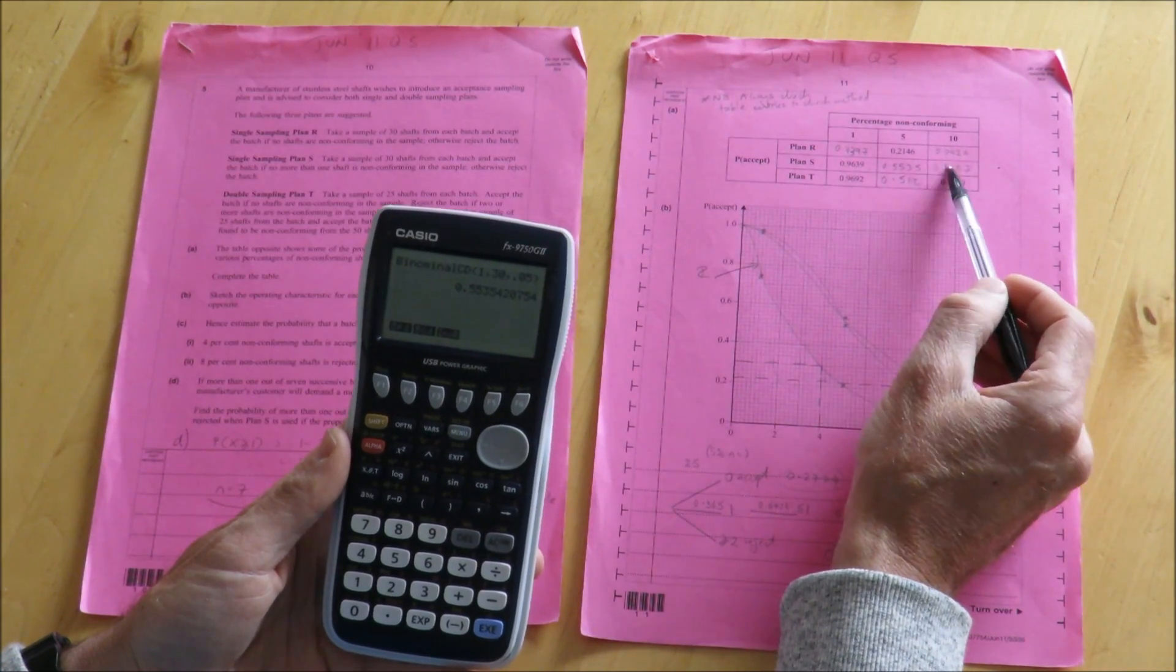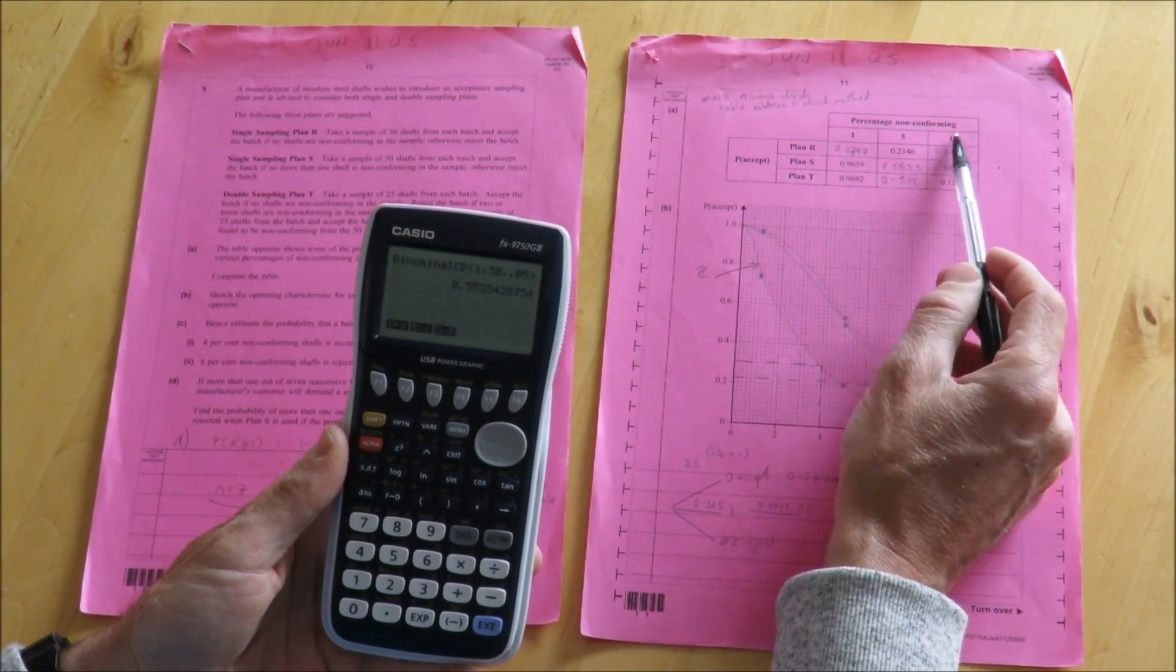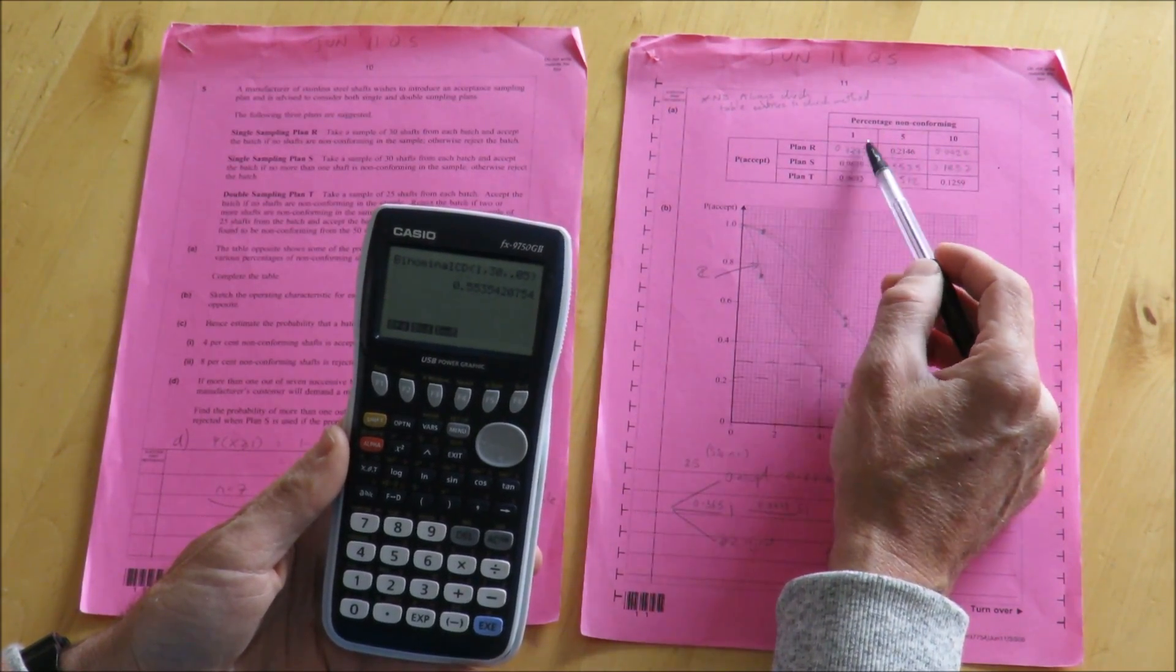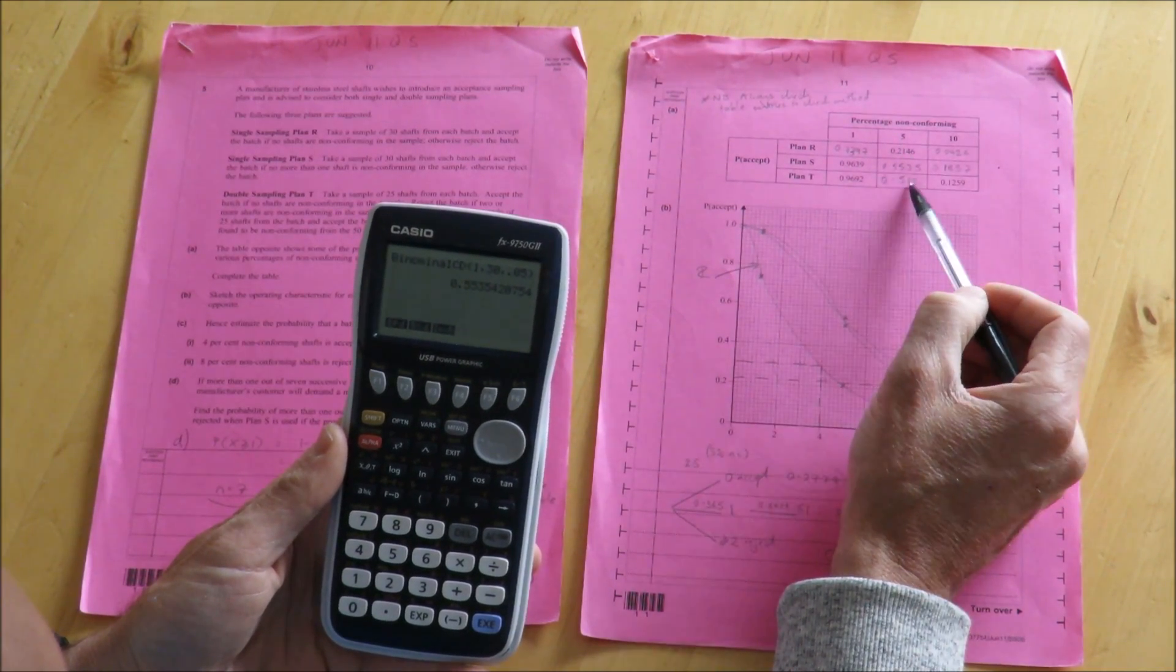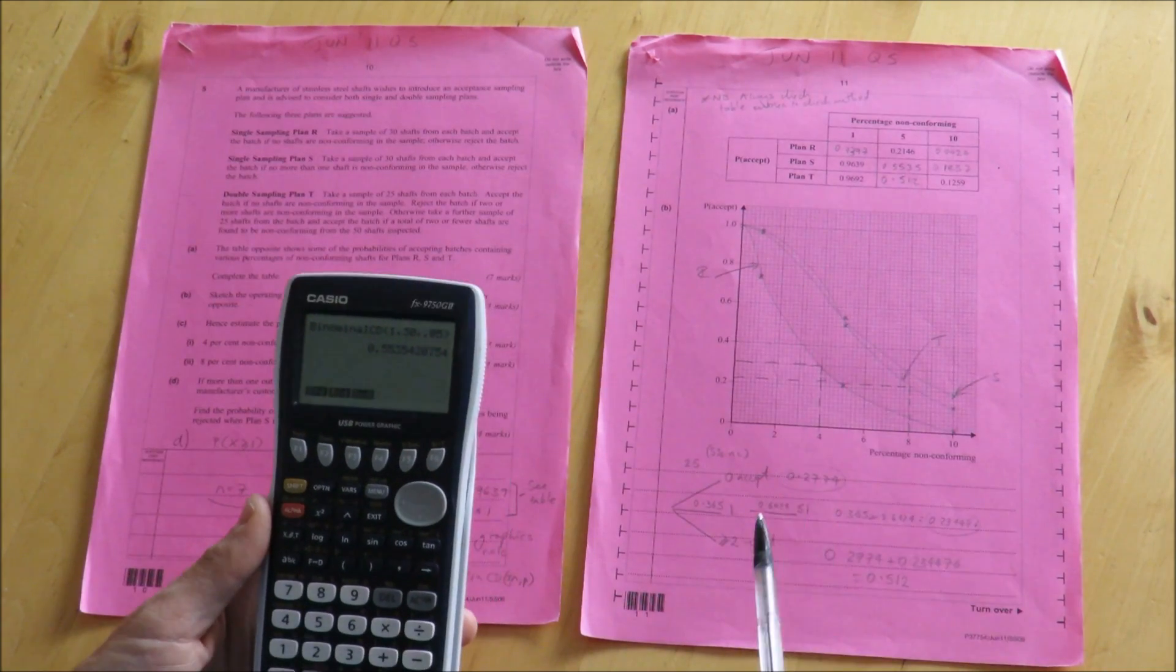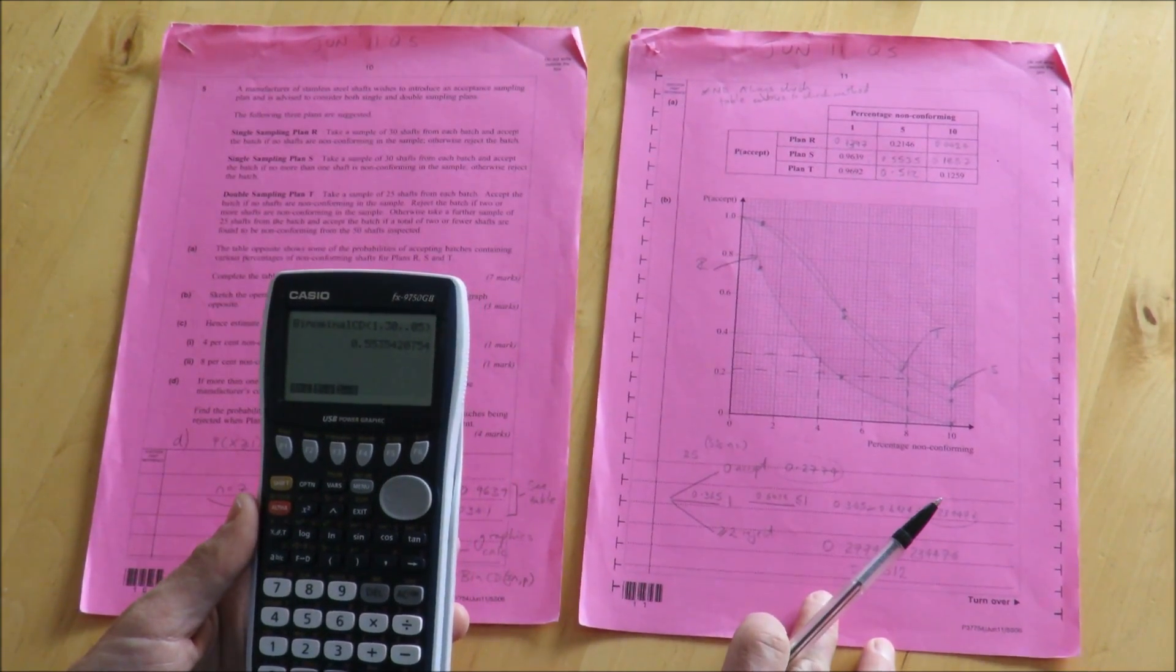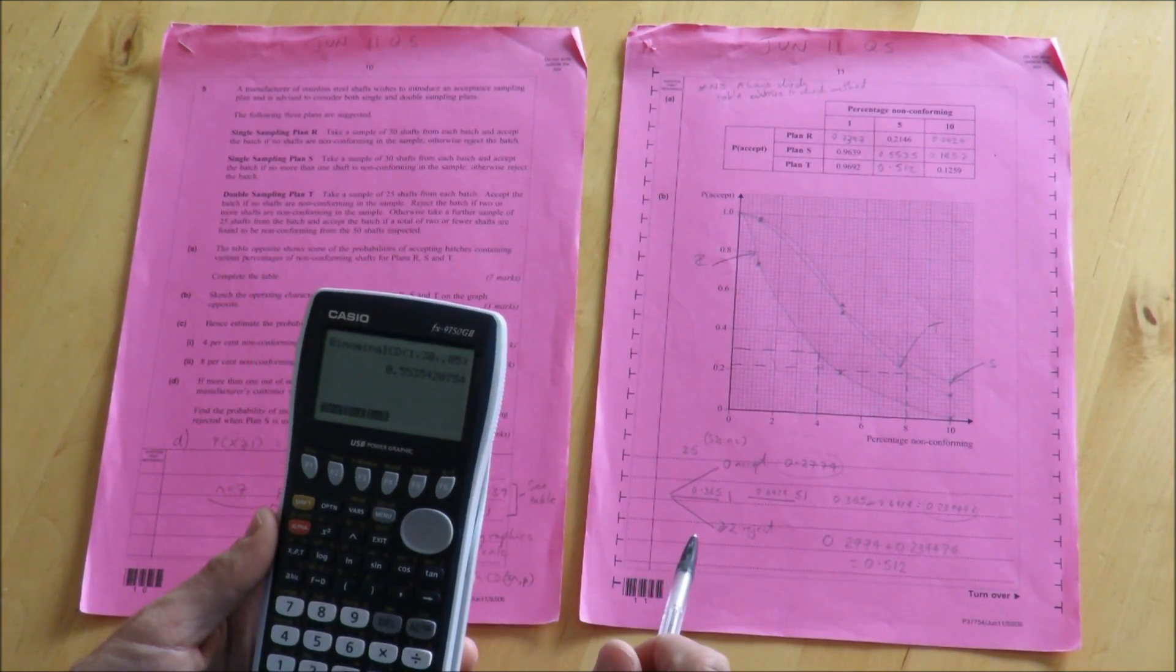These other two values are completed in exactly the same way, but 10% non-conforming, as opposed to 5 and 1. A little bit more tricky is the last value here, because plan T is a double sampling plan. At the bottom of the page here I've shown how I've calculated this value.